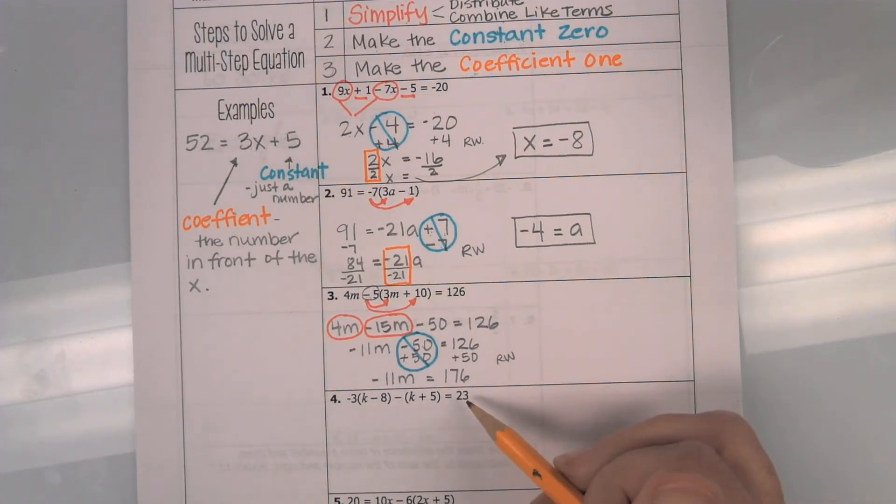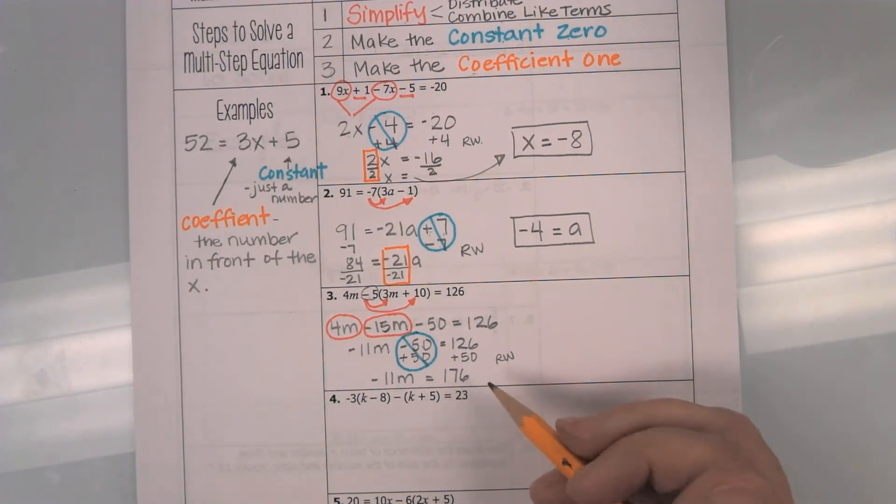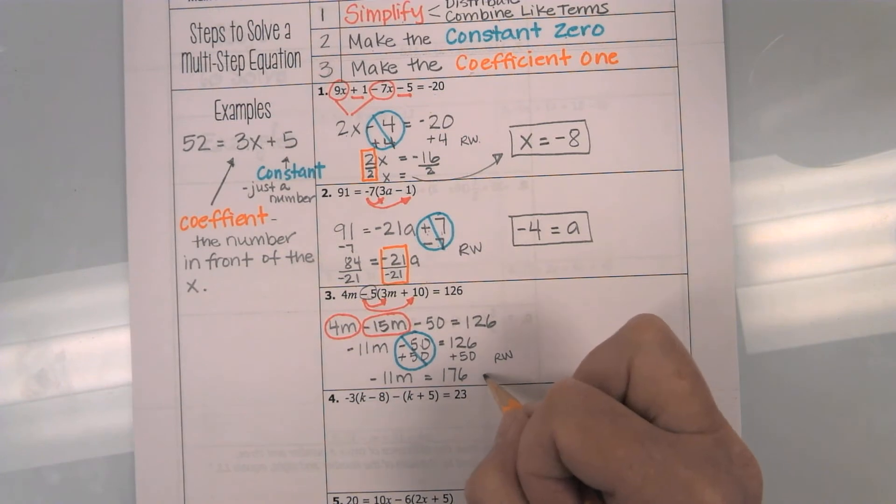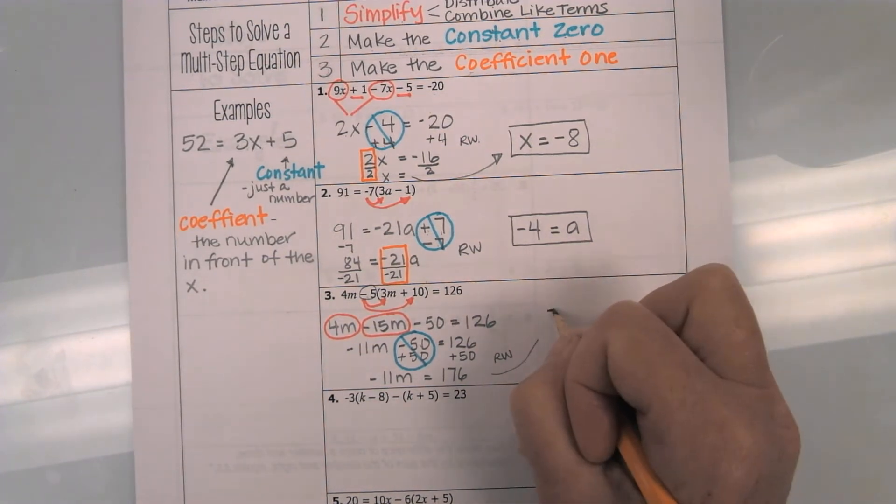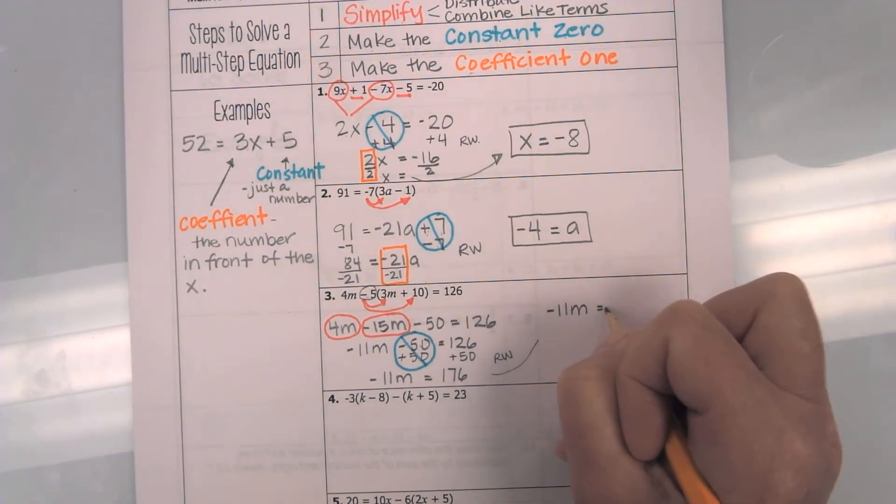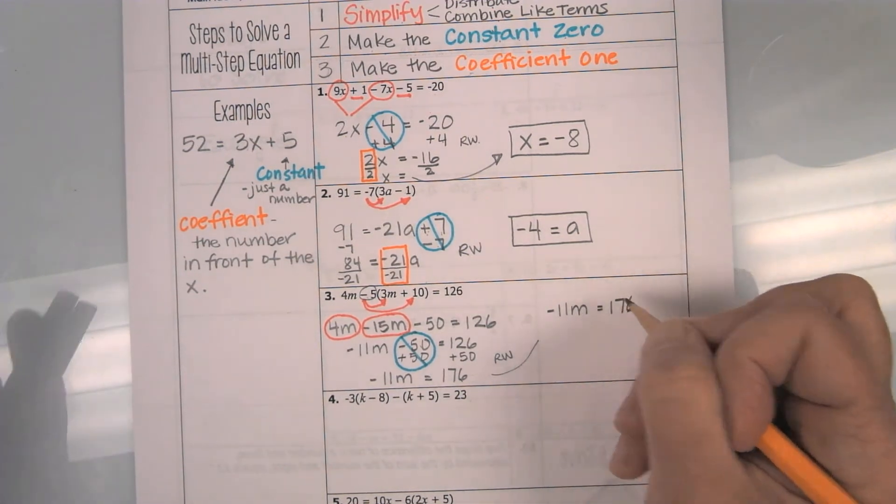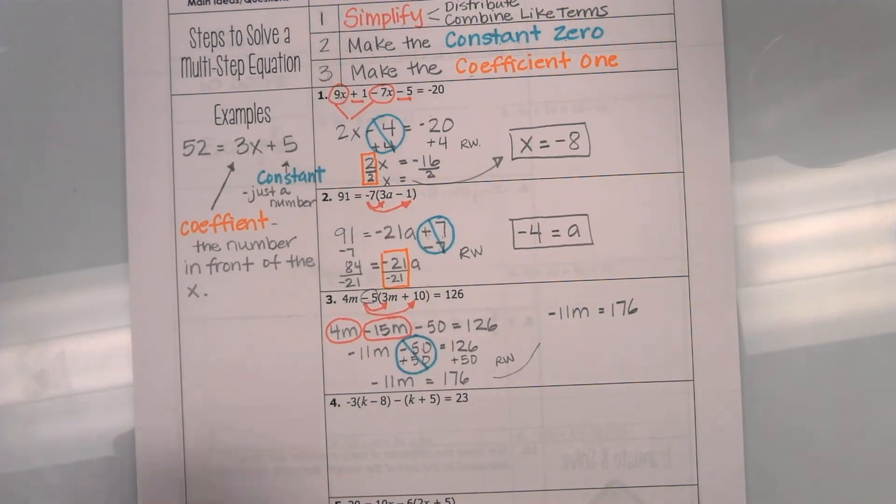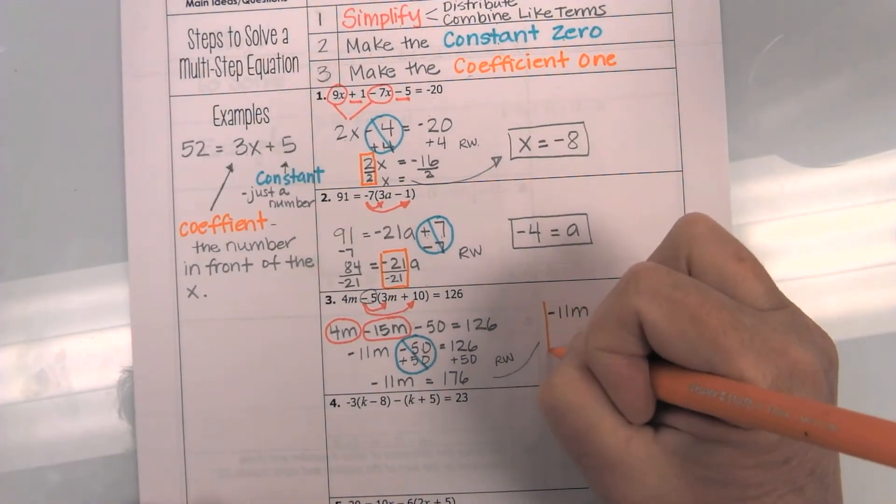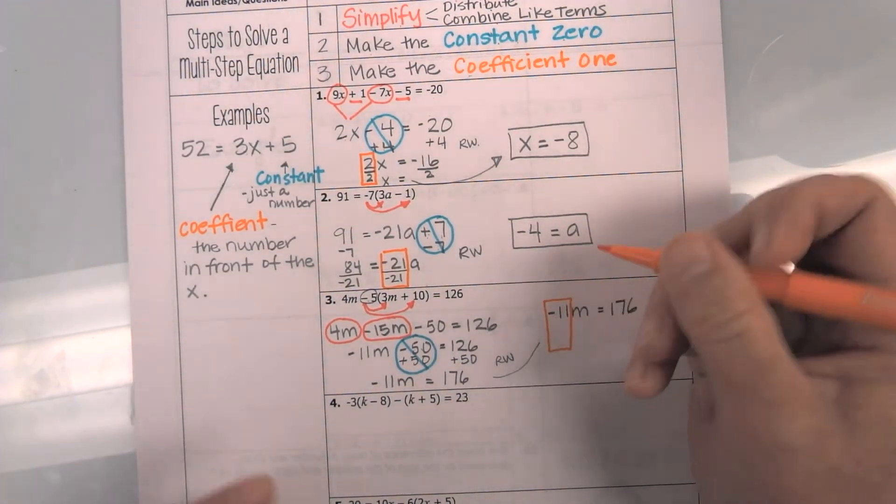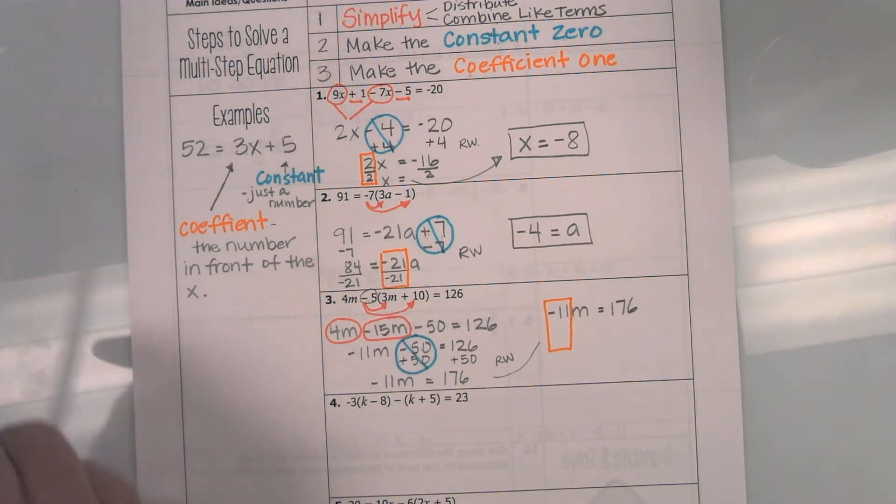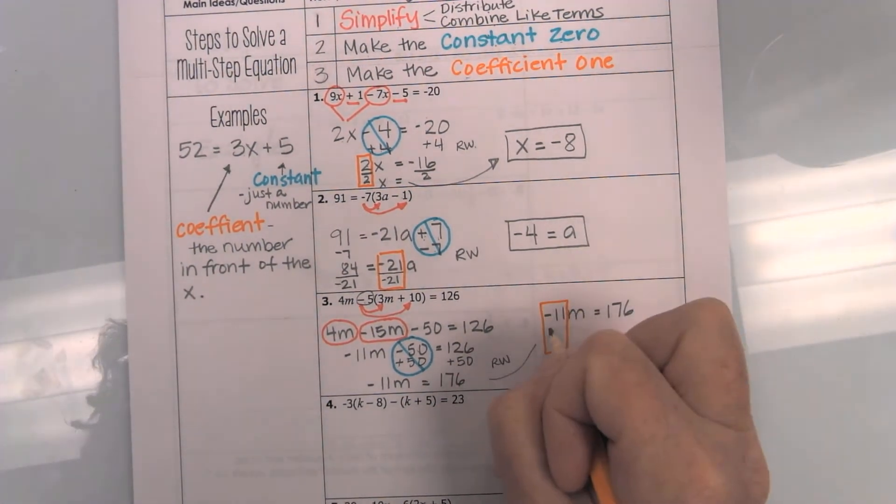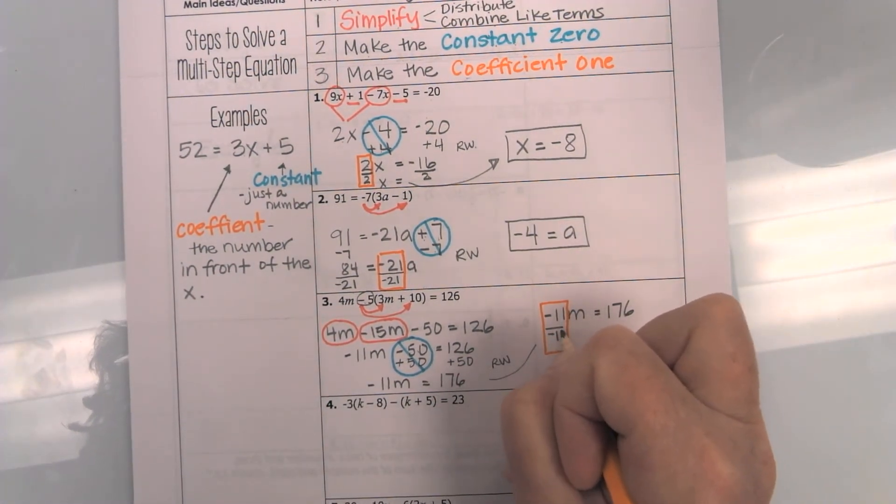So, at this point, I am going to move it over here. So, notice I have a negative 11m equals 176. And so, what I am going to do at this point is I am going to make my coefficient a 1. Okay. Now, in order to make this coefficient a 1, I do need to divide it by itself.